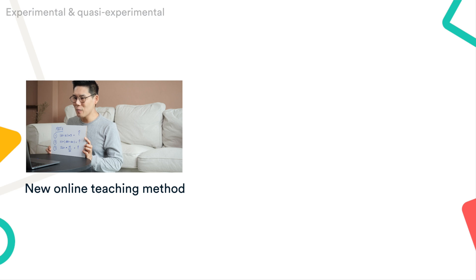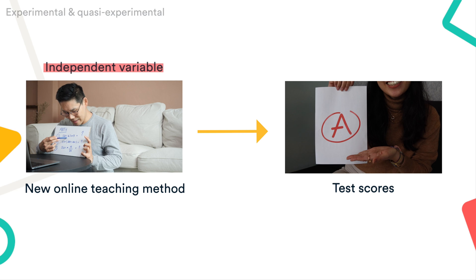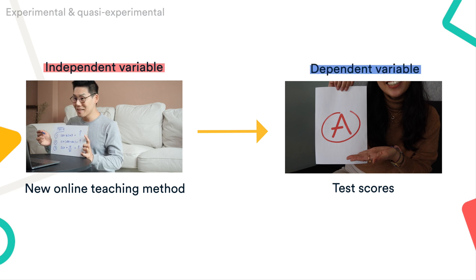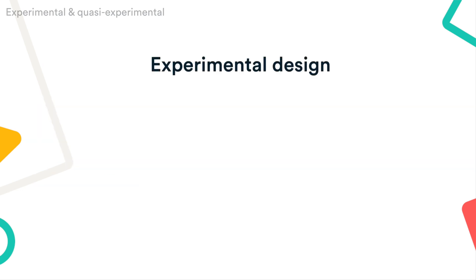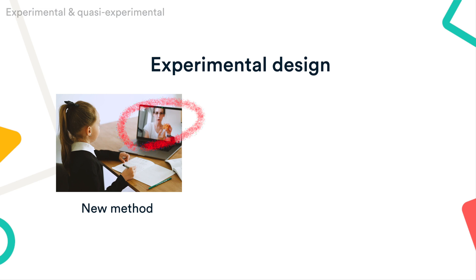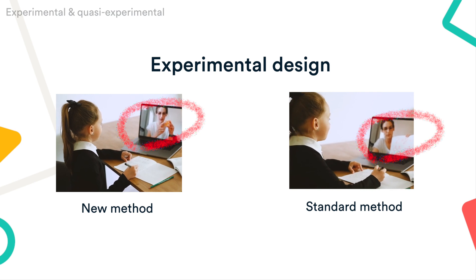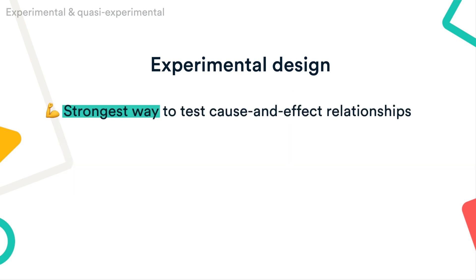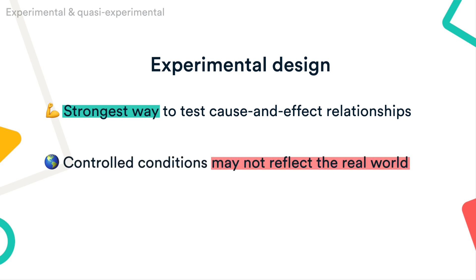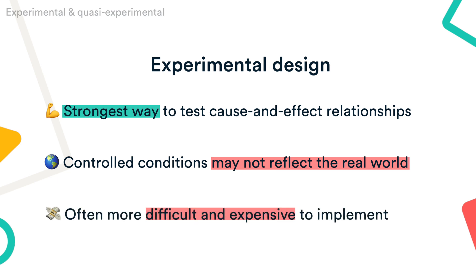An experimental design involves manipulating an independent variable and measuring the outcome of a dependent variable while controlling other factors. For example, let's say you want to test whether a new online teaching method improves test scores. The independent variable is the teaching method and the dependent variable is the test score. You will randomly assign one group of students to be taught using the new method and another group to be taught using a standard method in order to compare their outcomes and test scores. Experiments are the strongest way to test cause-and-effect relationships without the risk of other variables influencing the results. However, their controlled conditions may not always reflect how things work in the real world, and they're often also more difficult and expensive to implement.